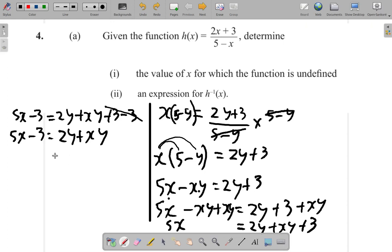Then I factorize and get y inside the bracket: 2 plus x. Right? You see that? y into 2y is 2, y into xy is x. If I multiply back the bracket, y times 2 gives 2y, y times x gives xy, right? This is 5x minus 3.